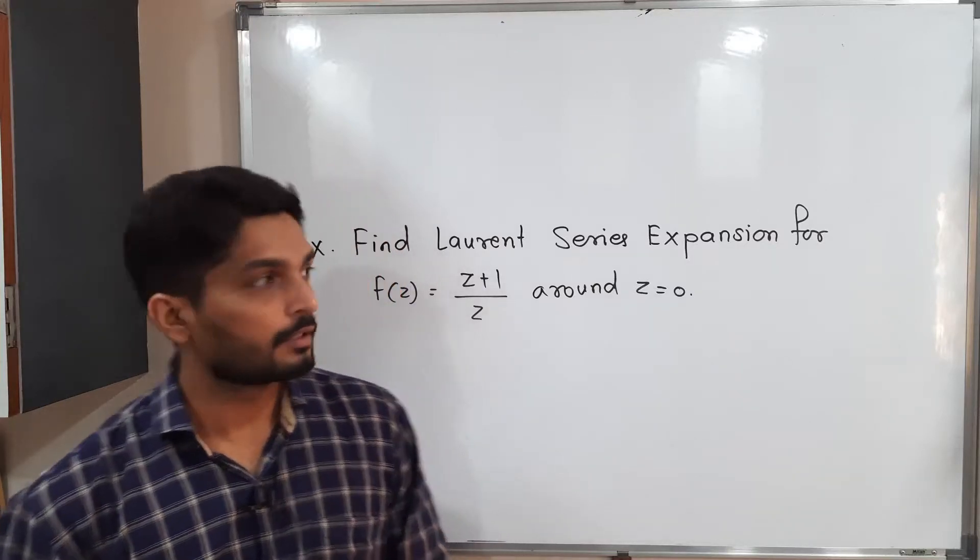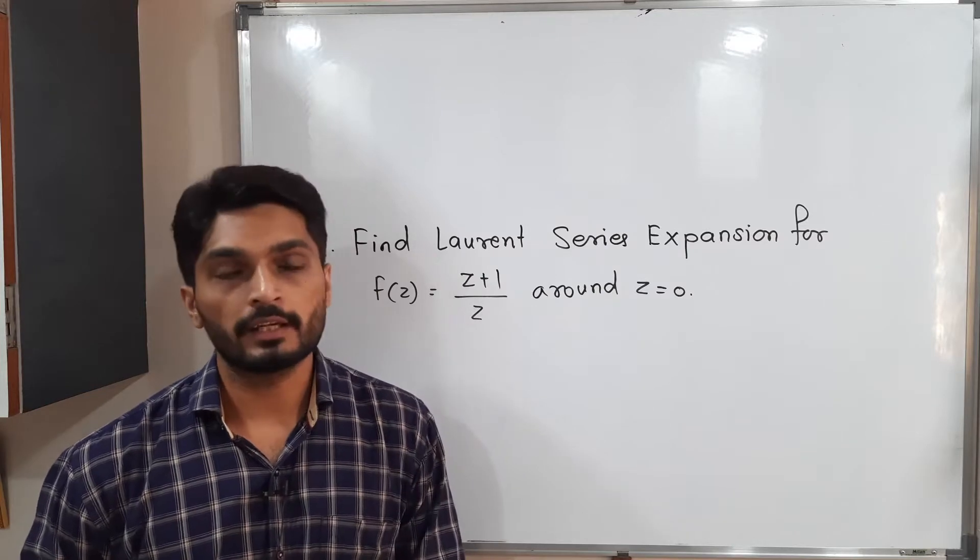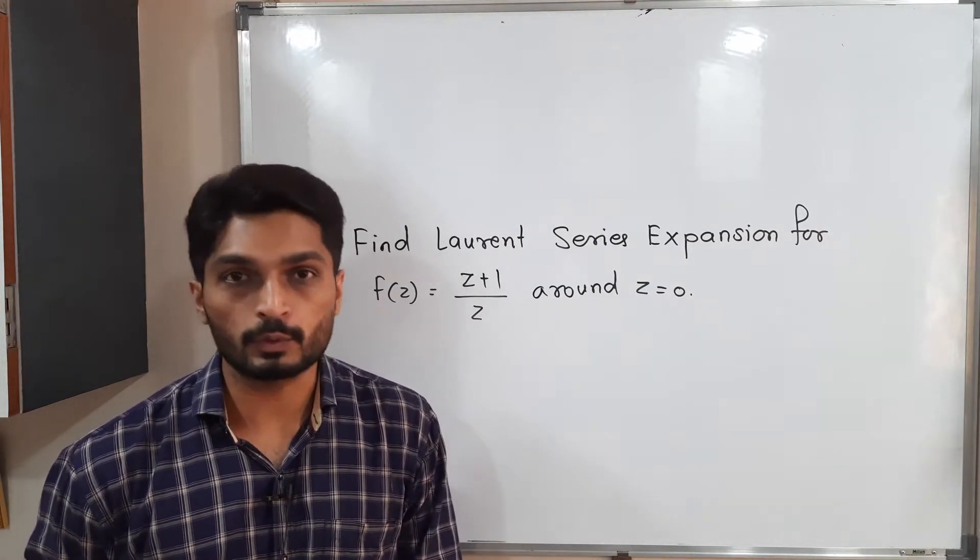Let us discuss this example. We have this function f of z is equal to z plus 1 upon z and we have to find its Laurent series around z is equal to 0.